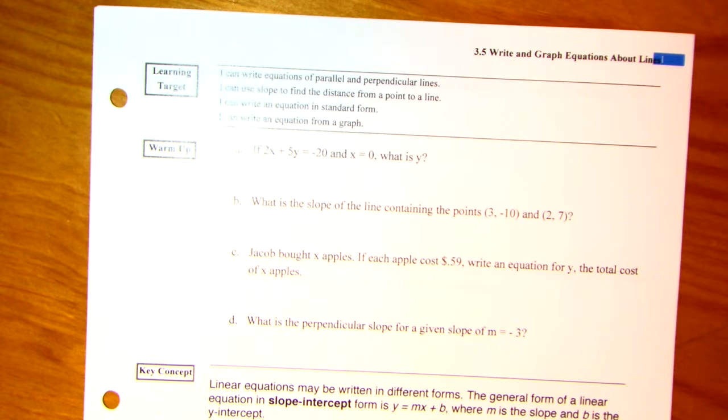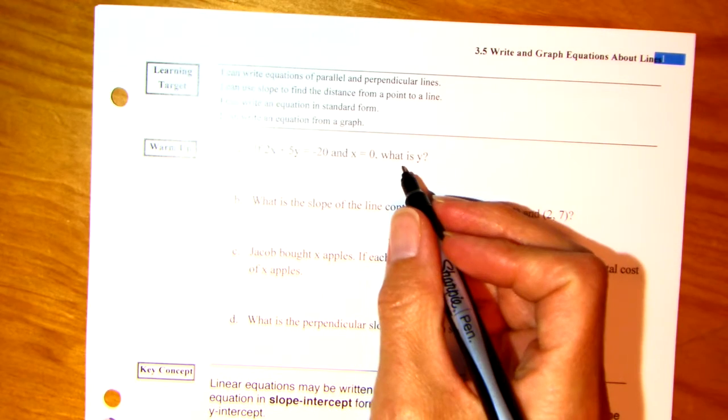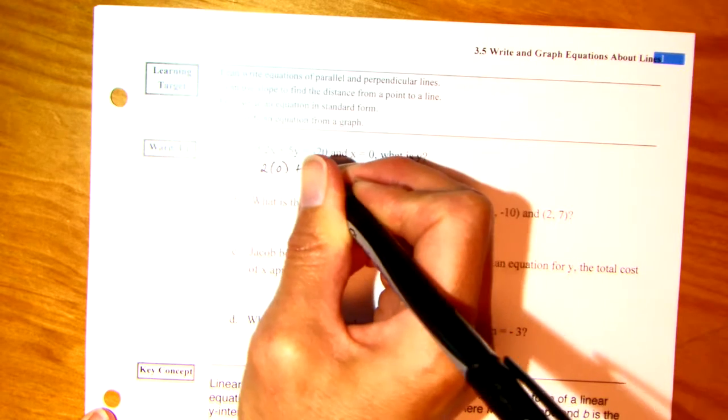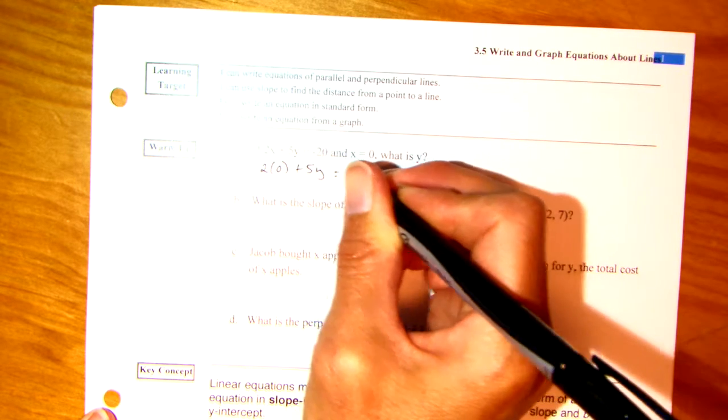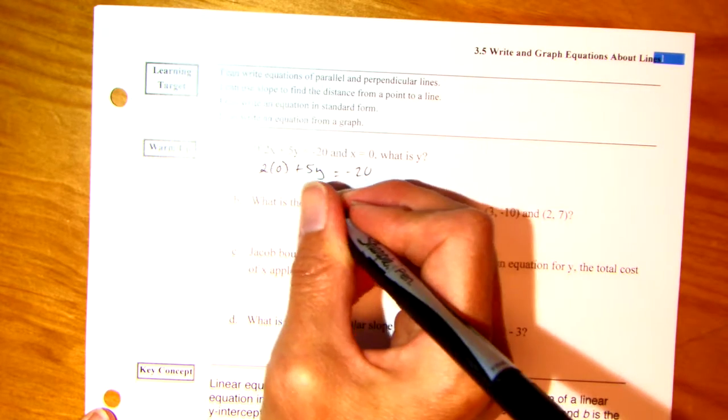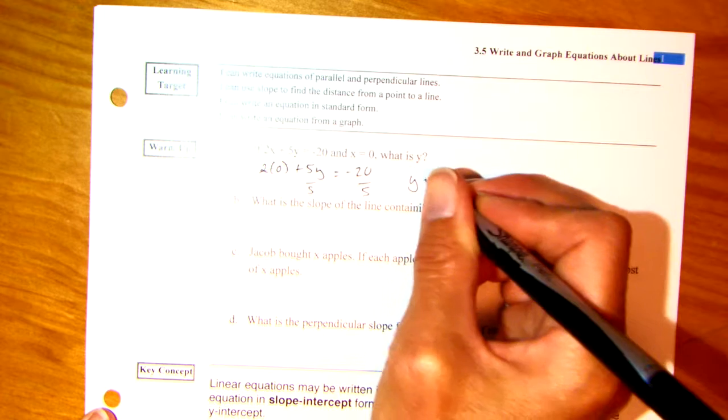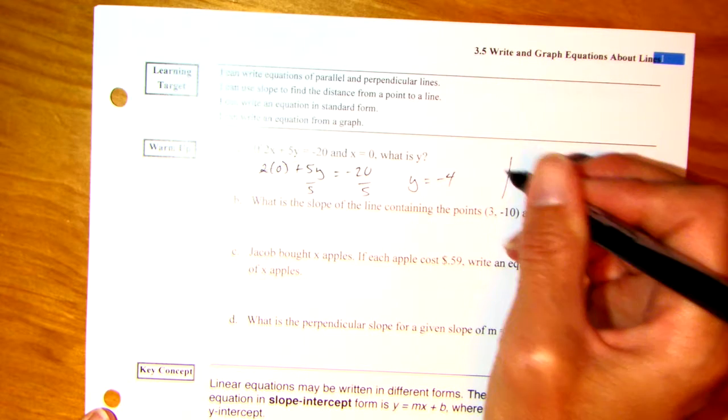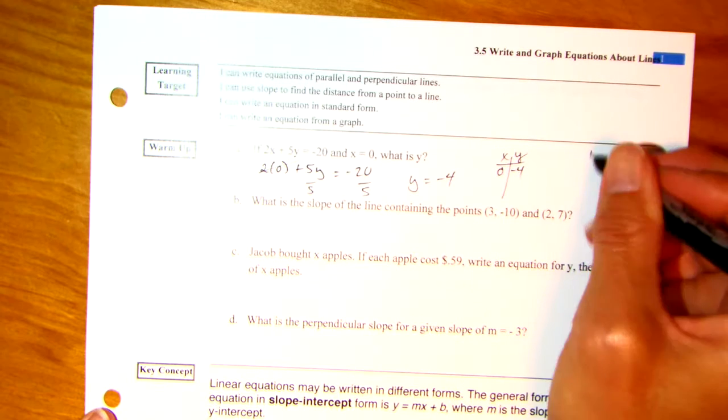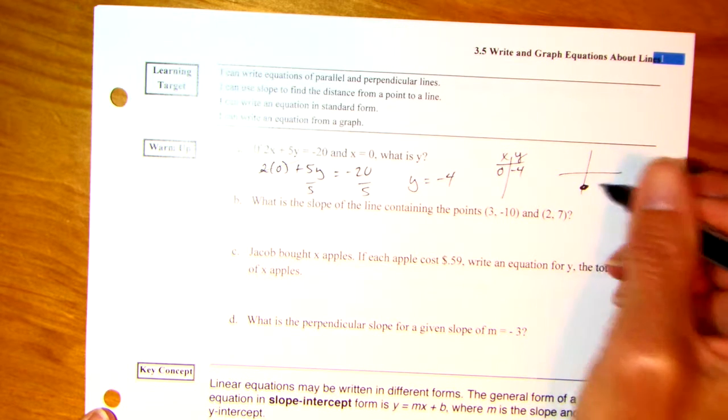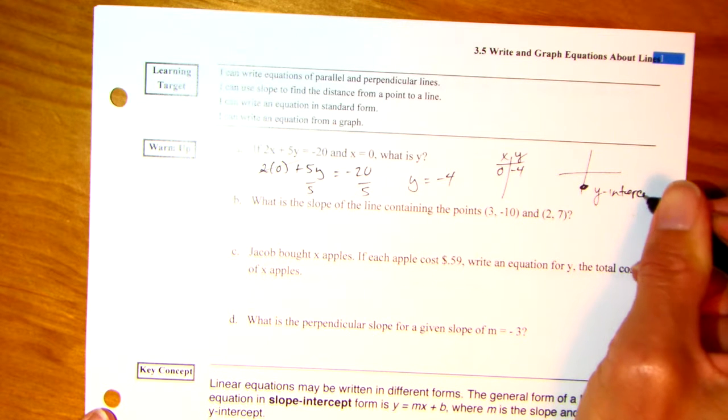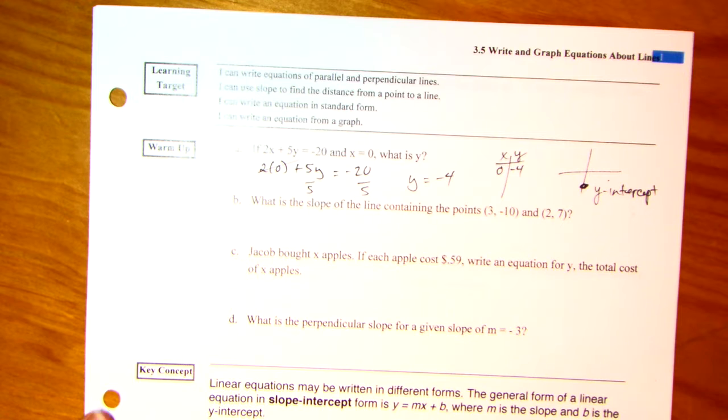If 2x plus 5y equals negative 20 and x equals 0, what is y? Well, let's substitute 0 for x. So I have 2 times 0 plus 5y equals negative 20. Of course, this is gone. 5y equals negative 20. I'm going to divide both sides by 5. y is equal to negative 4. So again, basically what this means, when x is 0, y equals negative 4. If you recall, there would be a point down here. That would be a y-intercept.